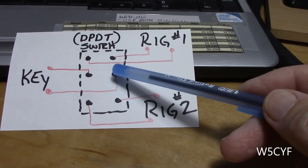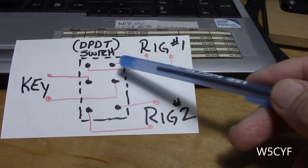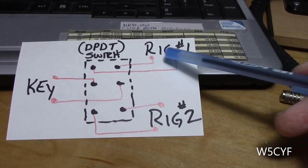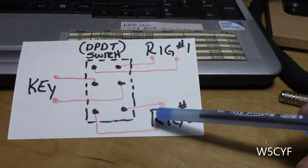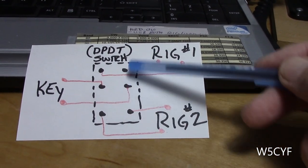Simply all you do is bring your key into the center contacts and then on one end you're going to go to one radio and on the other end you're going to go to the other radio that you have and then you have a switch that you flip back and forth between them.